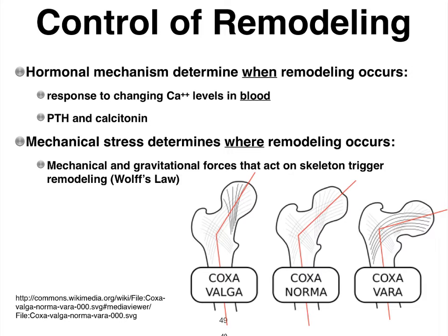Bone remodeling also depends on hormones that are released depending on the amount of calcium in our blood. Calcium levels in our blood play a very important role — we must always have certain amounts to contract muscles, make neurons work, go through cellular divisions, blood clotting, and so on. Depending on whether our calcium levels are rising or dropping in the blood, different hormones will be released, and those hormonal mechanisms determine when bone remodeling occurs.